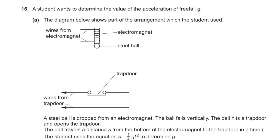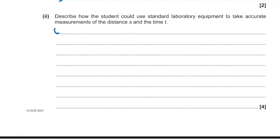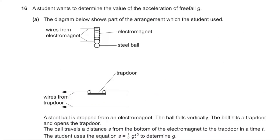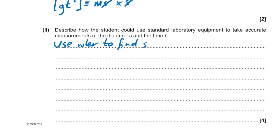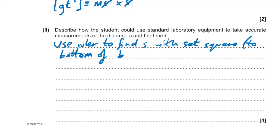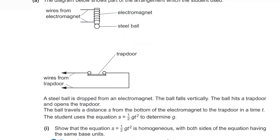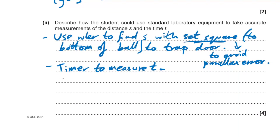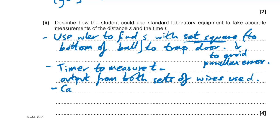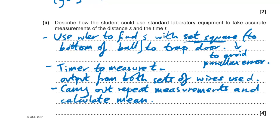Describe how to take accurate measurements of distance s and time t: use a ruler and set square to measure s to the bottom of the ball — the set square avoids parallax error. Use a timer connected via wires to measure t. Carry out repeat readings and calculate the mean.